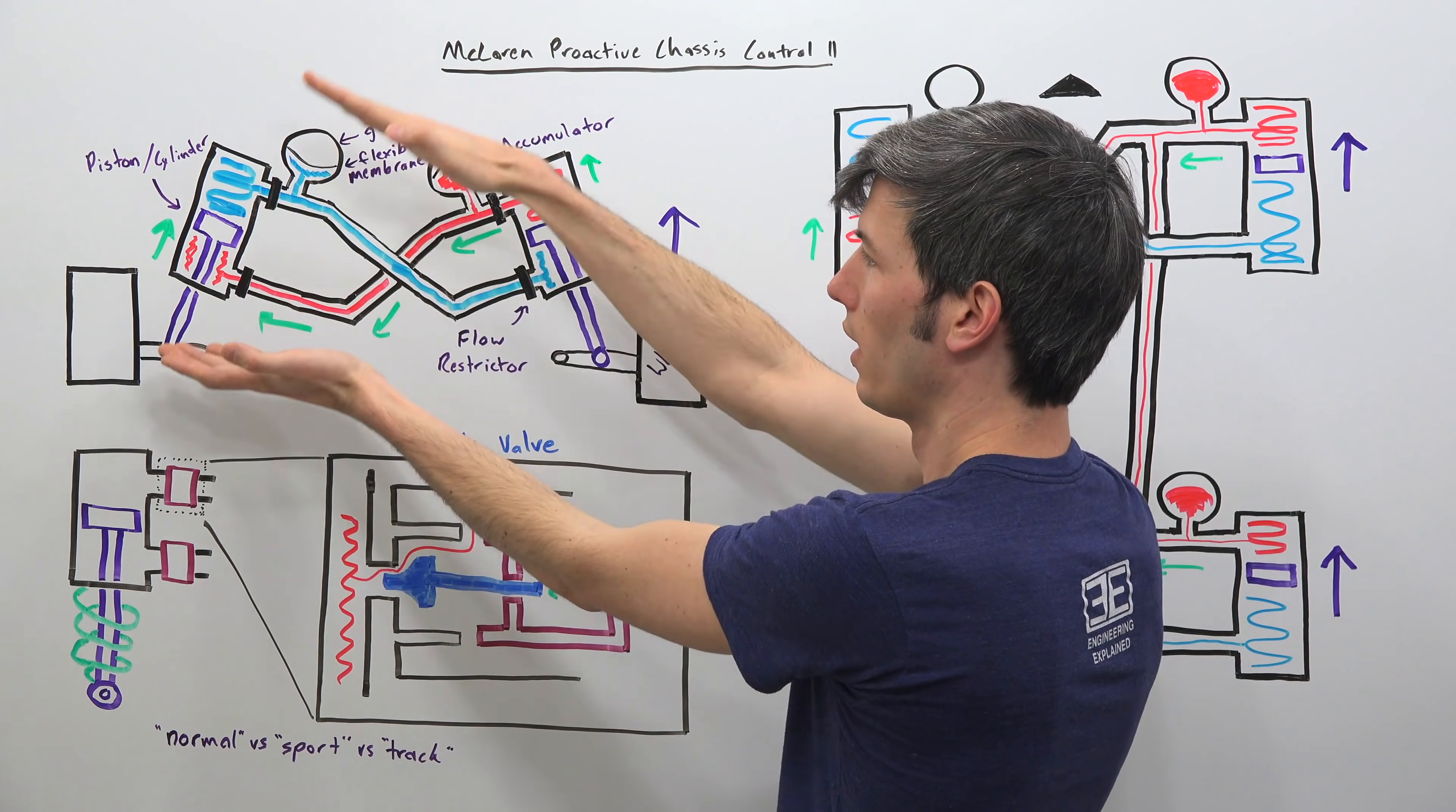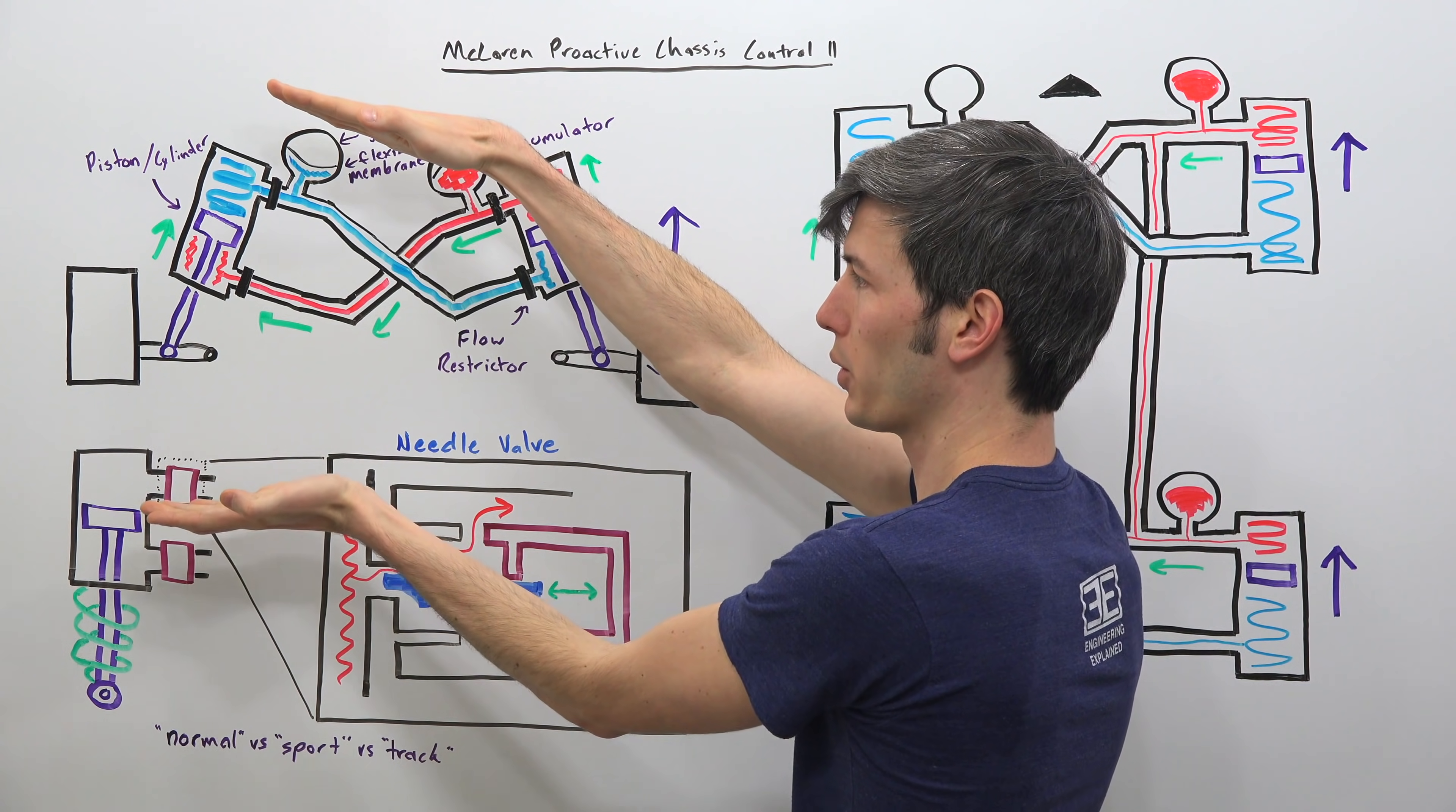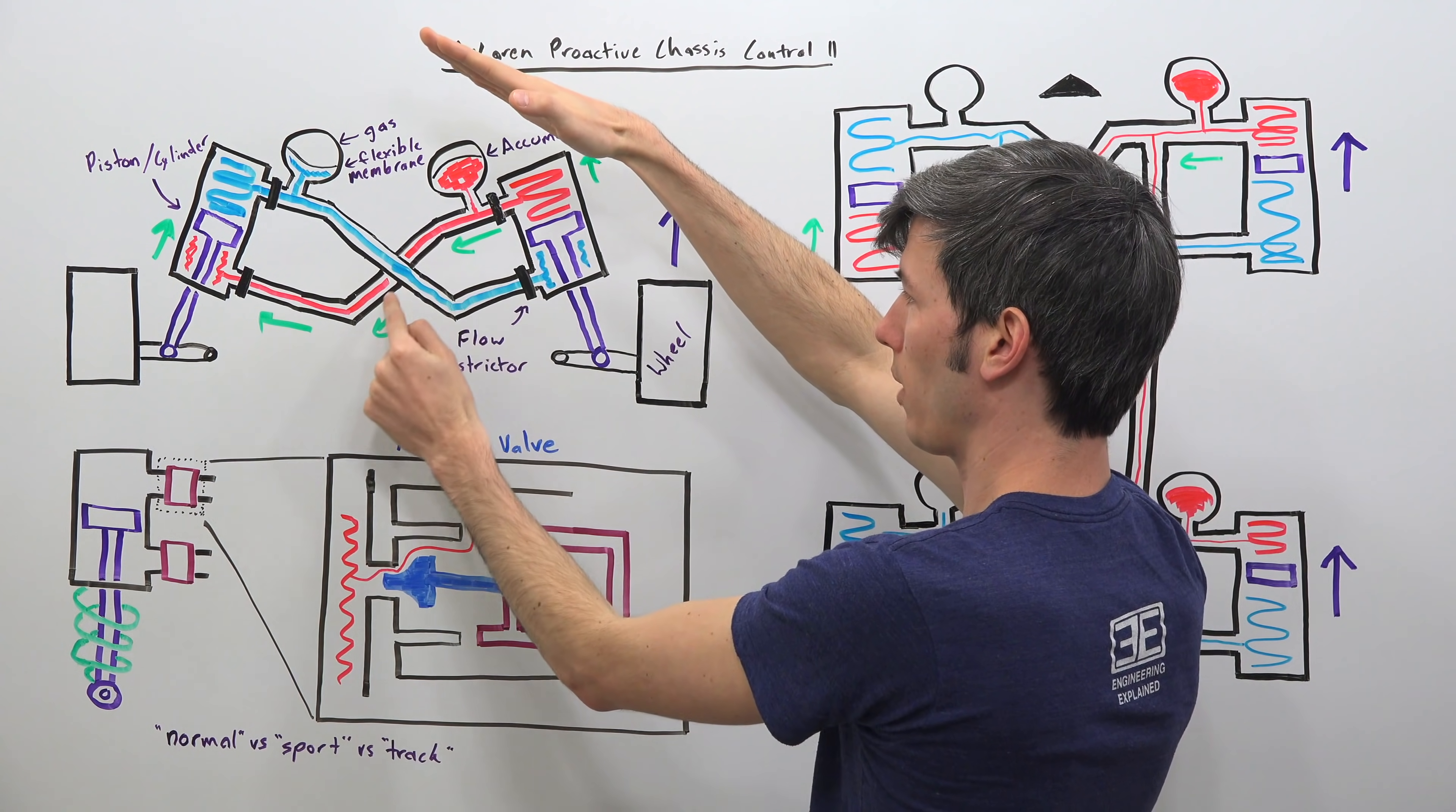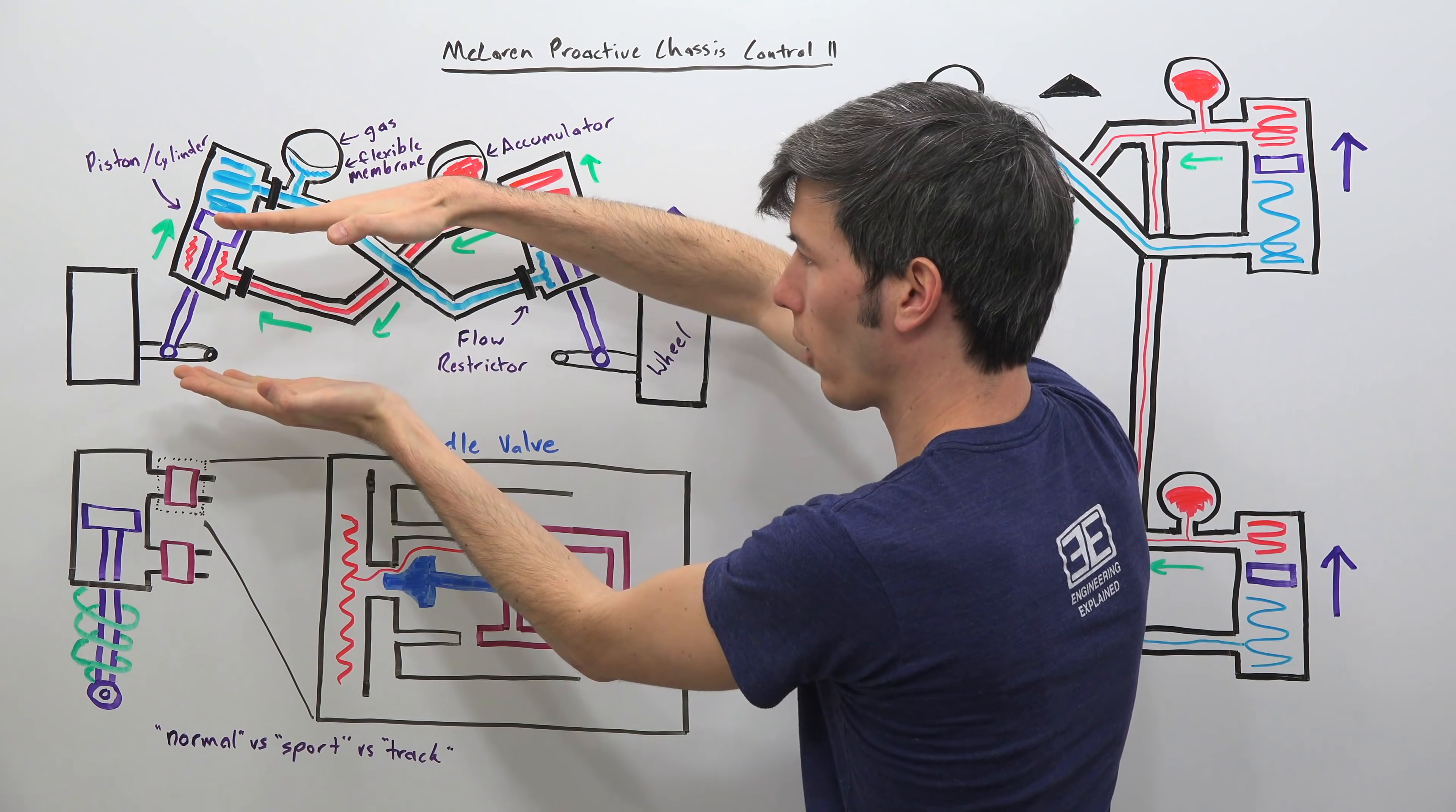Now the other side is actually trying to extend right there because the car wants to roll this way but you're instead pushing this piston up which means you're pushing that wheel back up to the body of the car. So instead of the car actually rolling because you force that pressure back on the underside of this piston over here you keep the car flat as it goes around that corner.